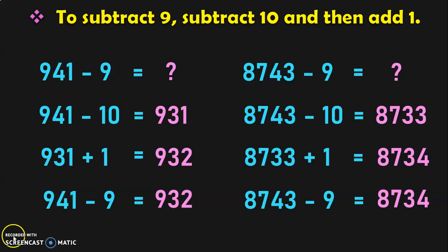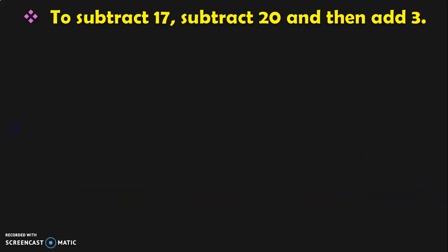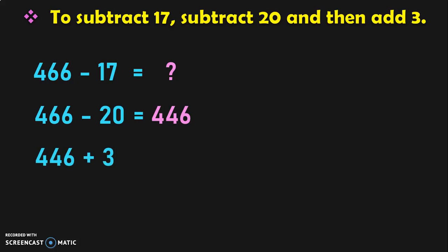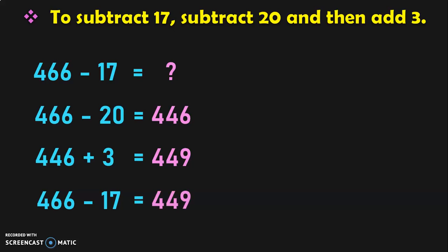Hope you are finding it easy. Now let us do the next concept. To subtract 17 from a number, first subtract the number by 20 and then add 3. For example, 466 minus 17: first, 466 minus 20 is equal to 446. Now, 446 plus 3 is equal to 449. So, the answer for 466 minus 17 is equal to 449.